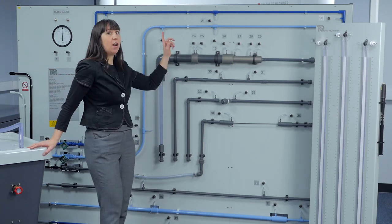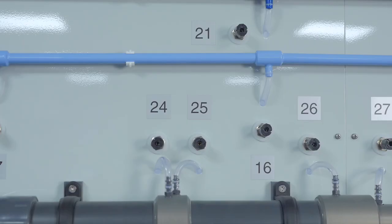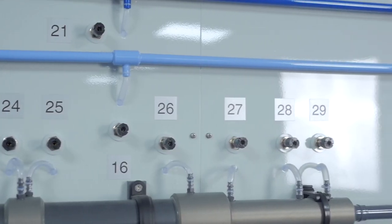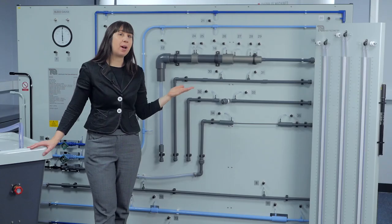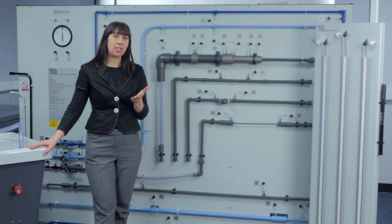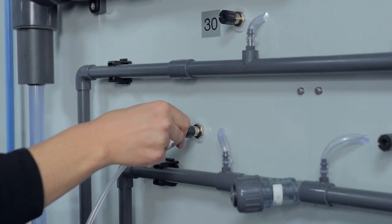Numbered pressure tappings are fitted at all the important points for measurement of pressure change along each pipe section or pipe component. Each pressure tapping includes a special self-sealing connector.